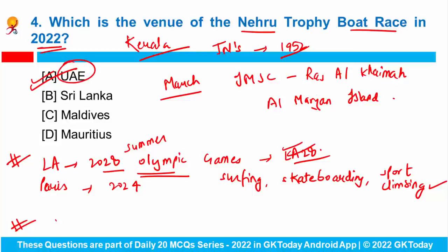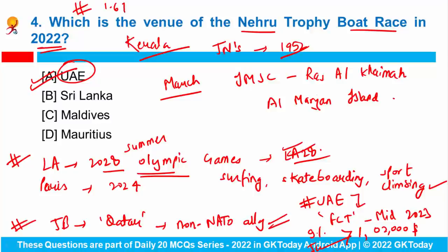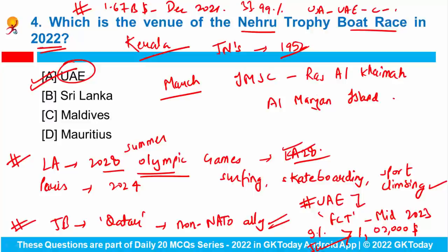UAE was in news because US President Joe Biden designated Qatar as a major non-NATO ally during a meeting with the ruling leader of Qatar at the White House. Also, the UAE announced it will introduce a federal corporate tax from mid-2023, taxing business profits worth more than $102,000 at 9% from June 2023. Additionally, India's exports of electronic goods touched $1.67 billion in December 2021, a growth of 33.99% from December 2020.